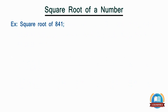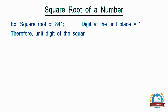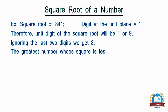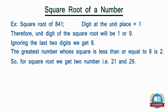Let's take the example of calculating the square root of 841. The digit at the unit place is 1. Since the square of 1 is 1 and the square of 9 is 81, the unit digit of the square root will be 1 or 9. Ignoring the last two digits — 4 and 1 — we are left with 8. The greatest number whose square is less than or equal to 8 is 2. So for the square root we get two candidate numbers: 21 and 29.